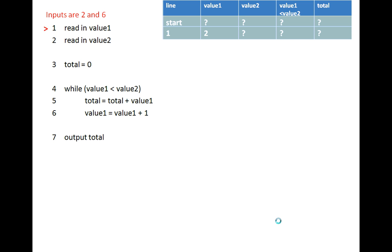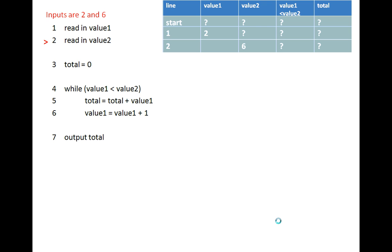When line one is executed it reads in value one, so we know we're using two for value one here, and on the right-hand side we update the values in our trace table to show what's changed. Question marks indicate that values are not yet known. So on line one we read in value one, which is initialized to two. On line two we read in value two, defined as six. Value one less than value two is left as undefined even though we could work it out, because it has not yet been evaluated.